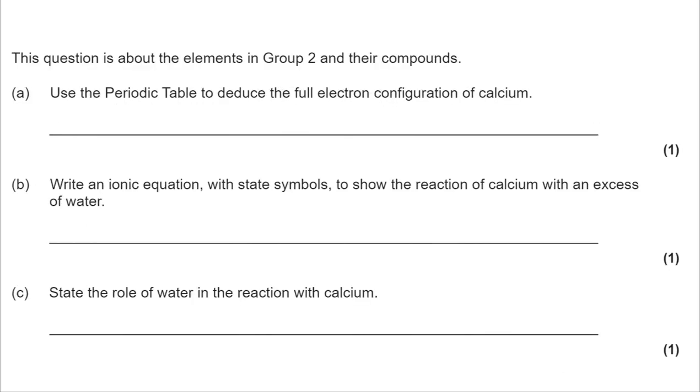Moving back to part A, we have got elements in group 2. Use the periodic table to deduce the full electron configuration of calcium. So you need to be familiar with the order: 1S, 2S, 2P, 3S, 3P, 4S, 3D, 4P. That will take you as far as you need to ever go. You need to know that S holds 2, P holds 6, D holds 10, although we don't need all of those for calcium.